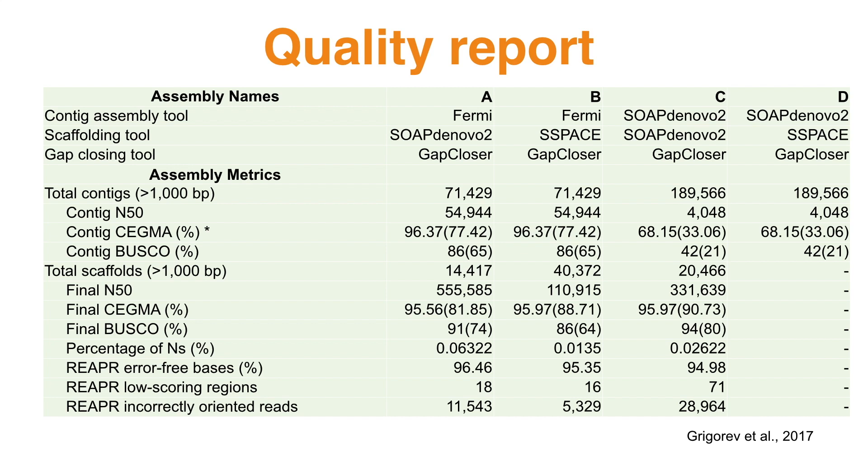Here is an example from our own study of a quality report from genome assembly, giving the number of contigs, their N50, and CEGMA completeness for combination of different tools, including the Bloom and string graph assemblers, in a study of Hispaniolan Solenodon genome.